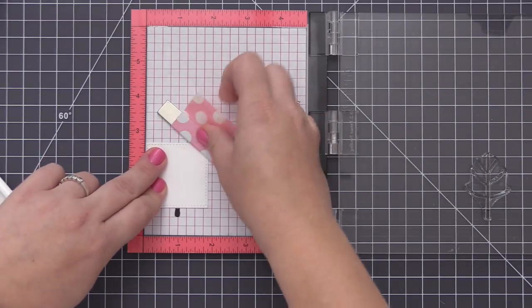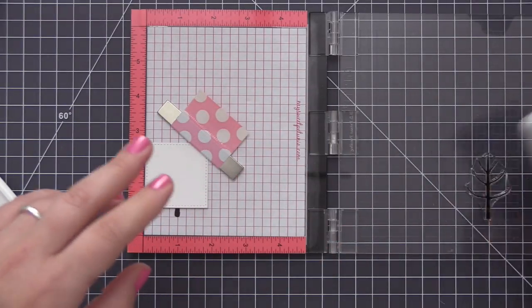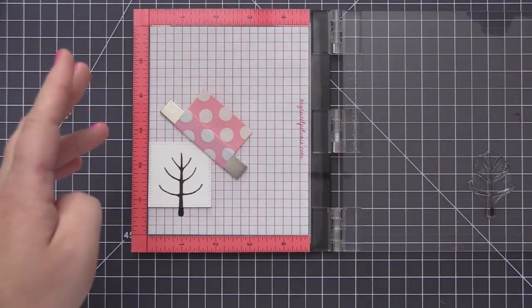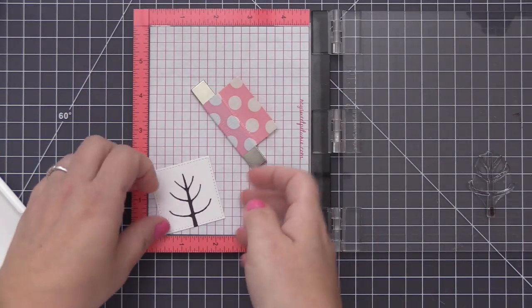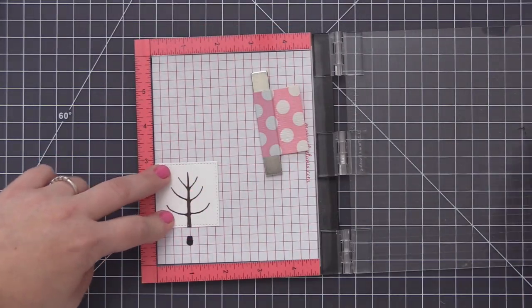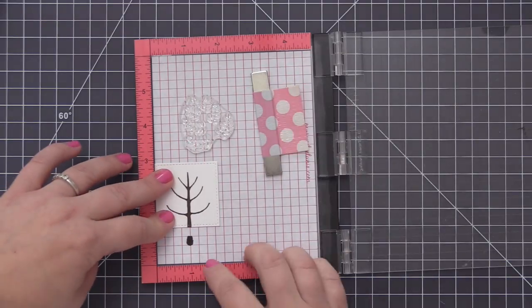My plan for this card idea is to have the four squares centered on a square card and have all four seasons represented on each of these different squares. Using the MISTI just helps to really keep everything uniform and have all of the trees stamped in the same spot on the different squares.